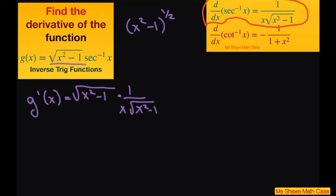That's the first part, then plus copy down inverse secant of x, and this is going to give you times this. So this is going to be one-half times x squared minus 1 to the negative one-half times the derivative of the inner function, which is 2x.